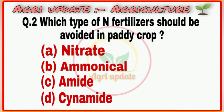Question number 2: Which type of nitrogen fertilizer should be added in paddy crop? First option is Nitrate, second option is Ammonical, third option is Amide, fourth option is Cinemide.